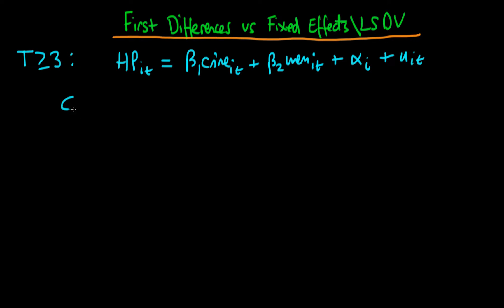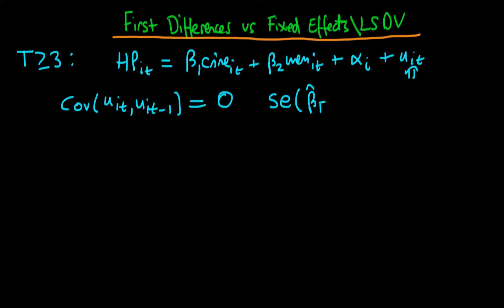In the last video, we found that if the covariance of u_it with u_{i,t-1} — specifically when tau equals 1 — shows no serial correlation in the error term, then the standard error of beta hat fixed effects is less than the standard error of beta hat first differences. So in circumstances where we have no serial correlation in our original error, we're better off using fixed effects rather than first differences. However, there are frequently circumstances when that isn't the case.